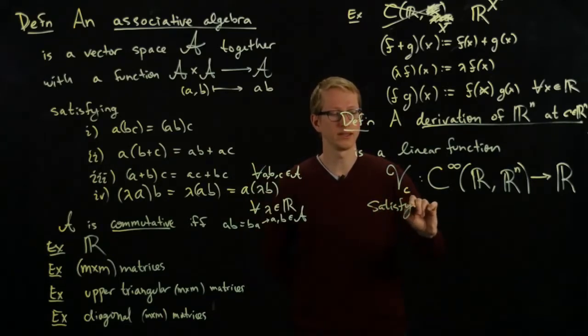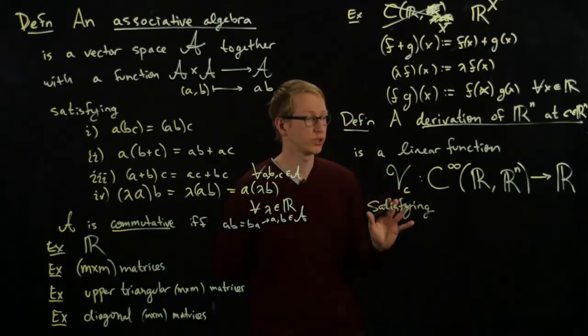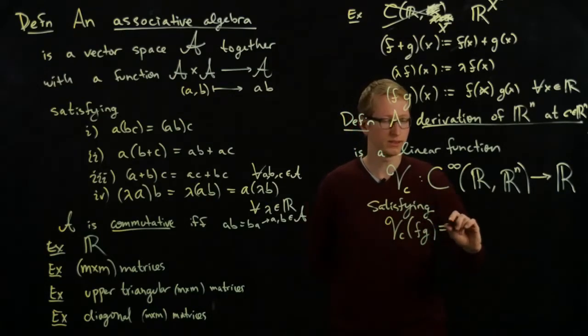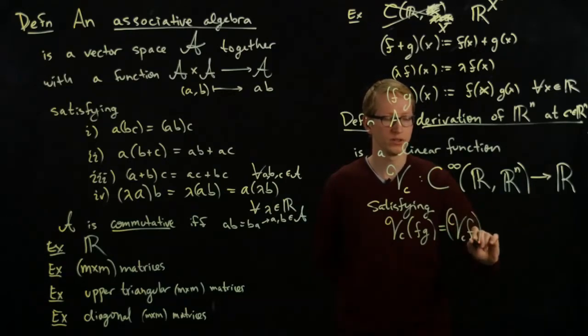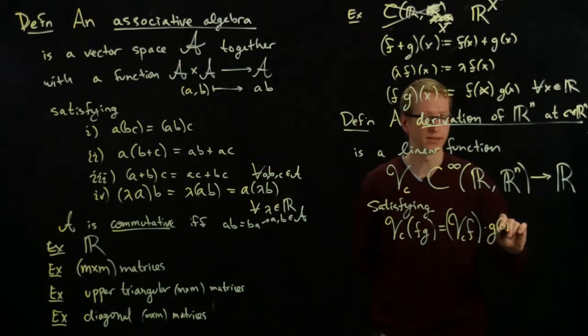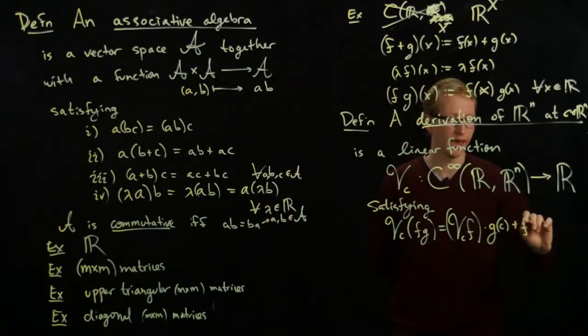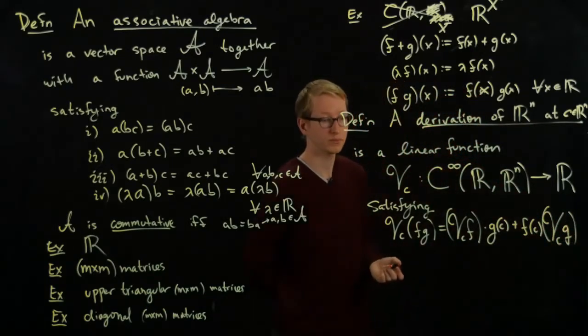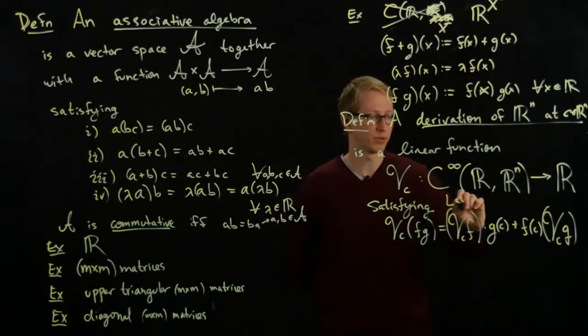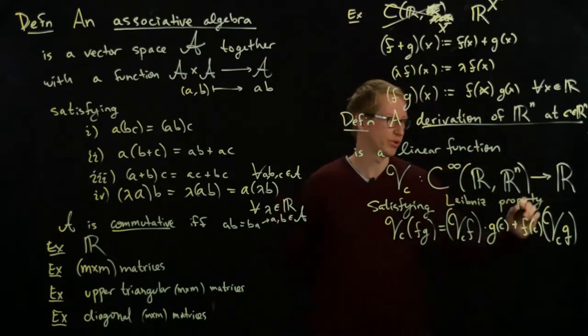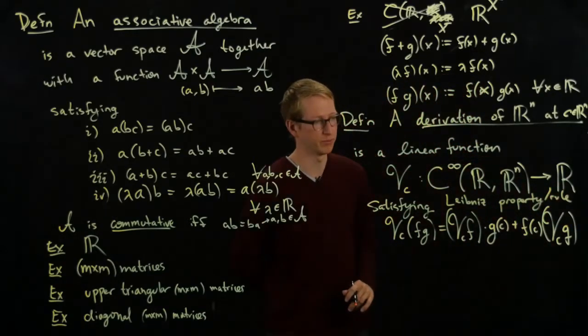Satisfying, and the reason that's kind of what it's like is because it satisfies the following very crucial and important condition, which says if I take any two functions and I multiply them, then this equals I act on the first function and I get a number, that's what this says, multiplied by the value of G at C, which is another number, plus F of C, which is a number, times applying this linear function to G, which is also another number. So it satisfies this, and this is called the Leibniz property or rule, familiar from ordinary derivatives.